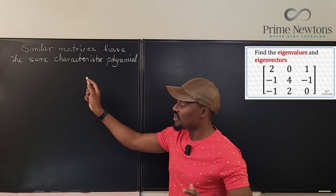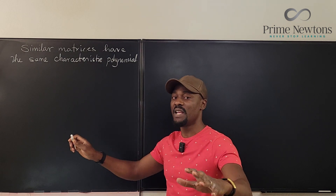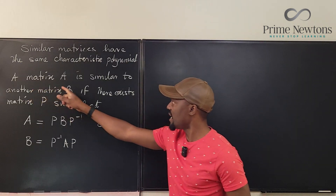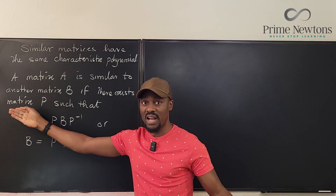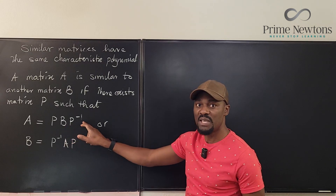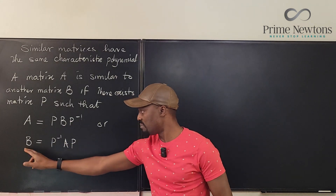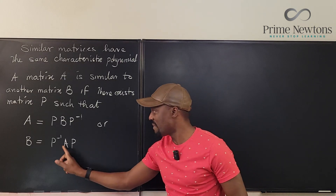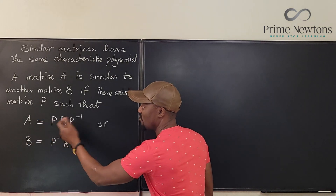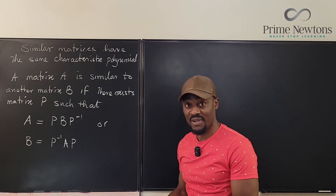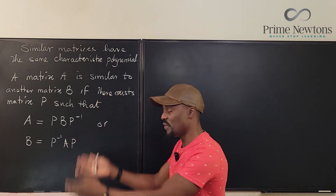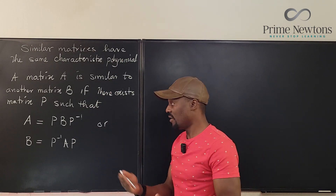For similar matrices A and B, let's define it: a matrix A is similar to B if there exists another matrix P such that A equals P times B times P inverse, where P must be invertible. Equivalently, B equals P inverse A P. Note that it doesn't matter which one you call A or B. For the sake of this proof, we'll stick to A equals PBP inverse.